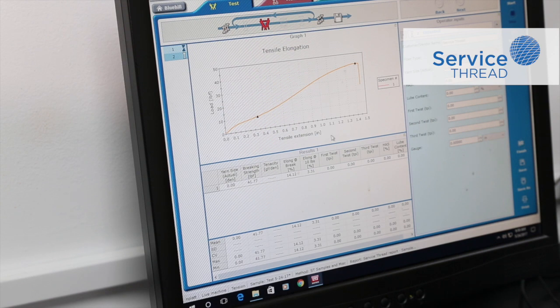For each specific yarn, we typically do at least 9 tests to get a good average of the material.